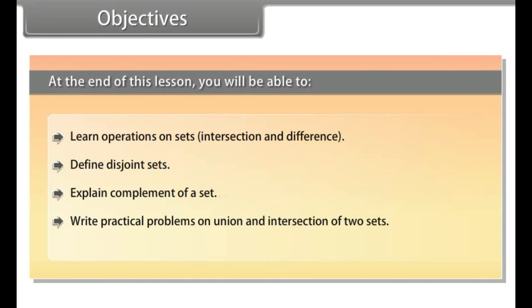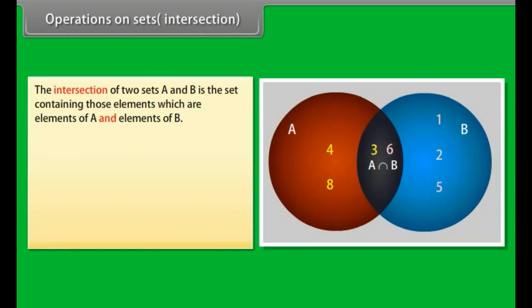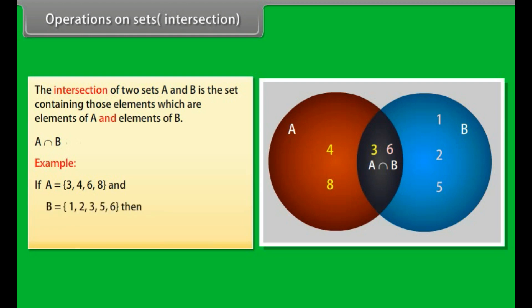Operations on sets — Intersection. The intersection of two sets A and B is the set containing those elements which are elements of A and elements of B. We use this symbol for intersection. Example: if A = {3, 4, 6, 8} and B = {1, 2, 3, 5, 6}, then A intersection B = {3, 6}. Look at this diagram now. This dark portion indicates A intersection B.